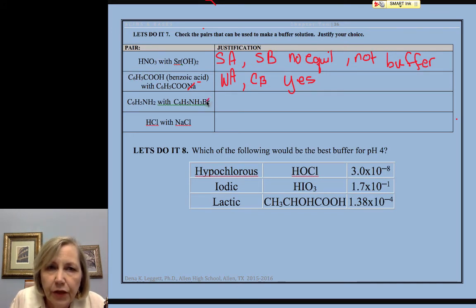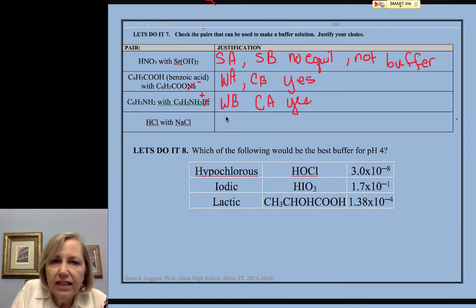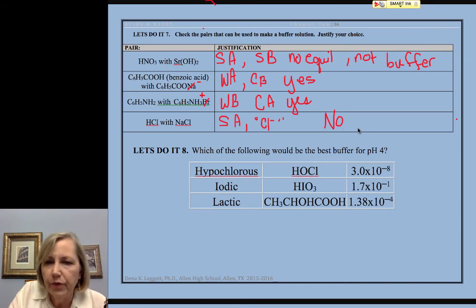The same here. I'm going to throw off that bromide because it's a spectator ion with no acidic or basic properties. I have a weak base and I have its conjugate acid. So that's yes. That will make a buffer system. HCl is a strong acid. NaCl, you might think of chloride as its conjugate, but it's a non-reactive conjugate. So this is no. This is a strong acid and a salt. There's no equilibrium present. And without an equilibrium, we cannot have a buffer.